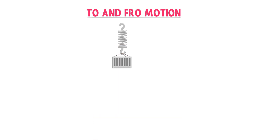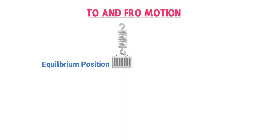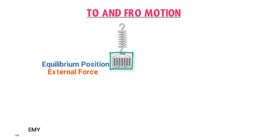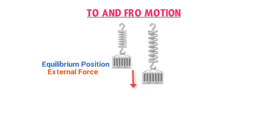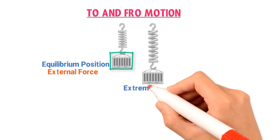Consider a vertical spring with a mass M suspended by it. This mass M is at its equilibrium position, or mean zero position. Now I am interested in displacing this mass M in the downward direction. According to Newton's first law of motion, I need to apply some external force F on this mass M. After exerting external force F downward, the mass will be displaced downward — from its equilibrium position to its extreme position.